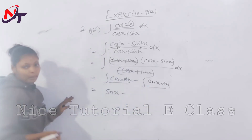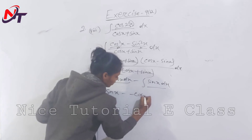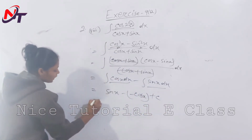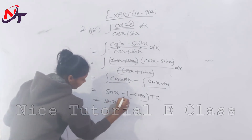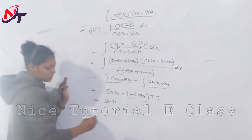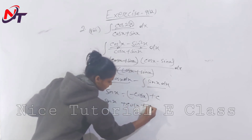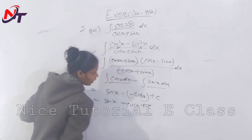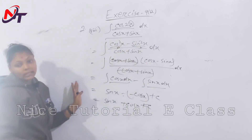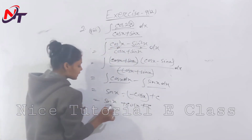Dividing by cos x plus sin x, those terms cancel, leaving integration of cos x minus sin x dx. Integration of cos x is sin x, and integration of minus sin x is plus cos x. So the answer is sin x plus cos x plus c.